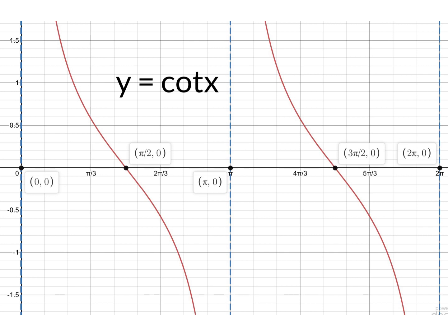And that relates to cot is cos over sine, so obviously where sine is 0 you get your asymptotes, and that's how we draw our graph. Thank you.